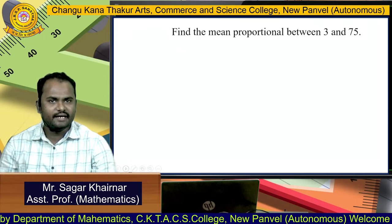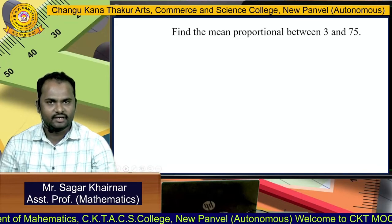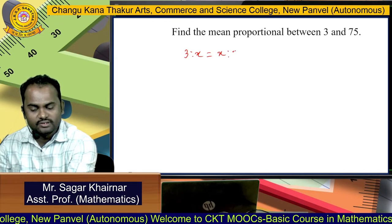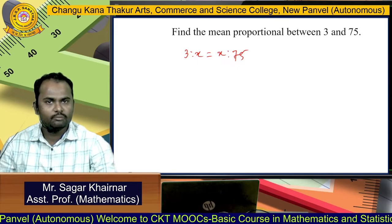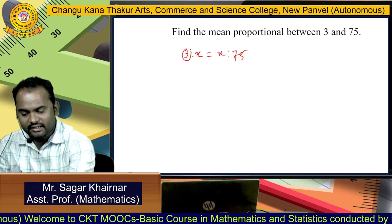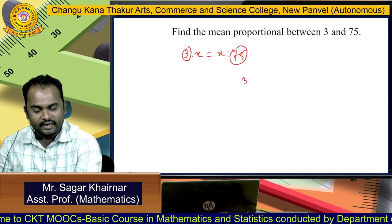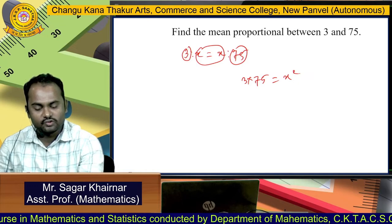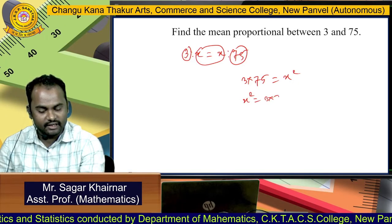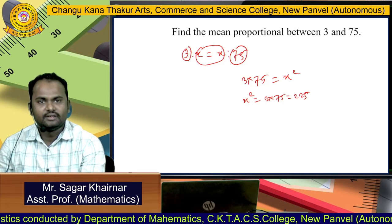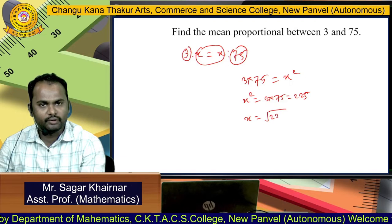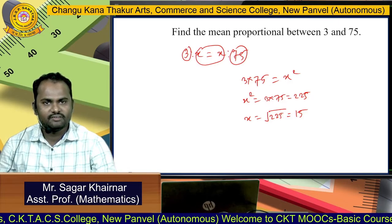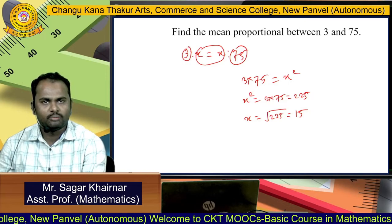Now we solve one example: find the mean proportional between 3 and 75. We need to find X such that 3:X = X:75. Using the product rule, 3 × 75 = X², so X² = 225, giving X = 15. So 15 is the mean proportional between 3 and 75, which is the geometric mean of 3 and 75.